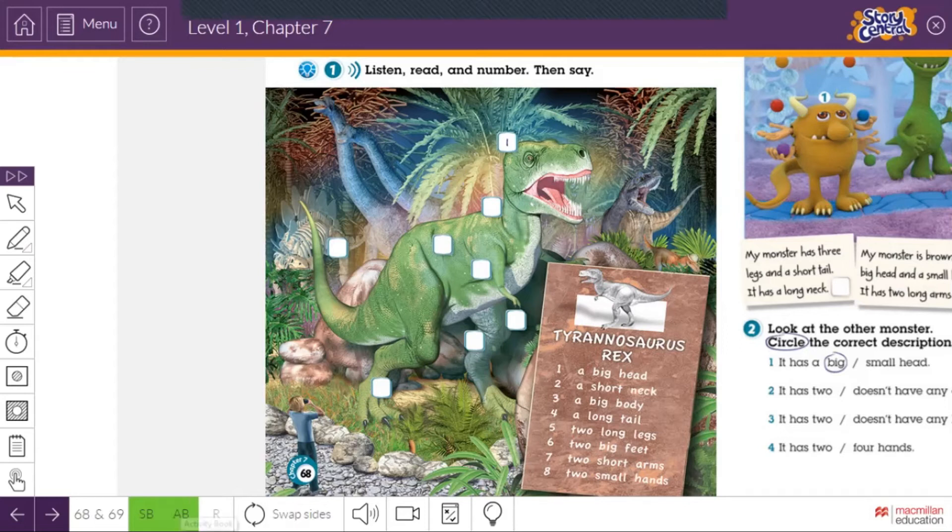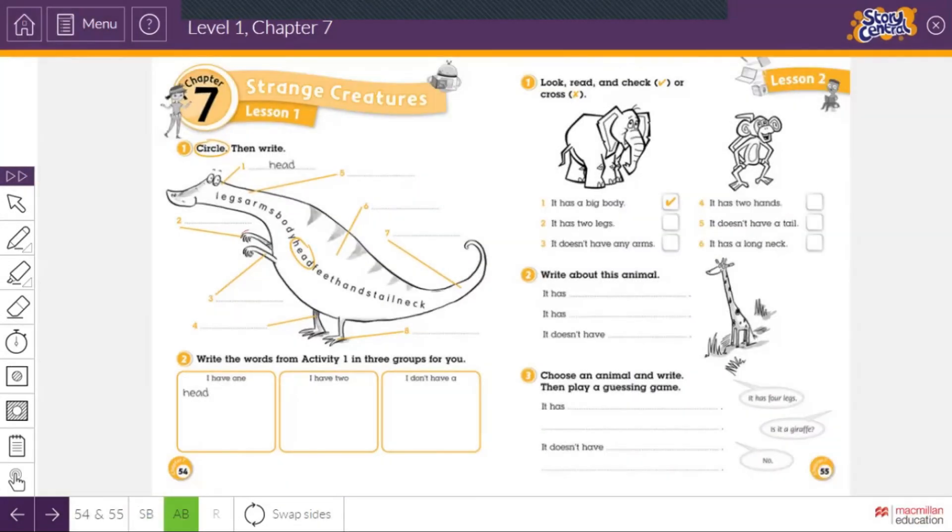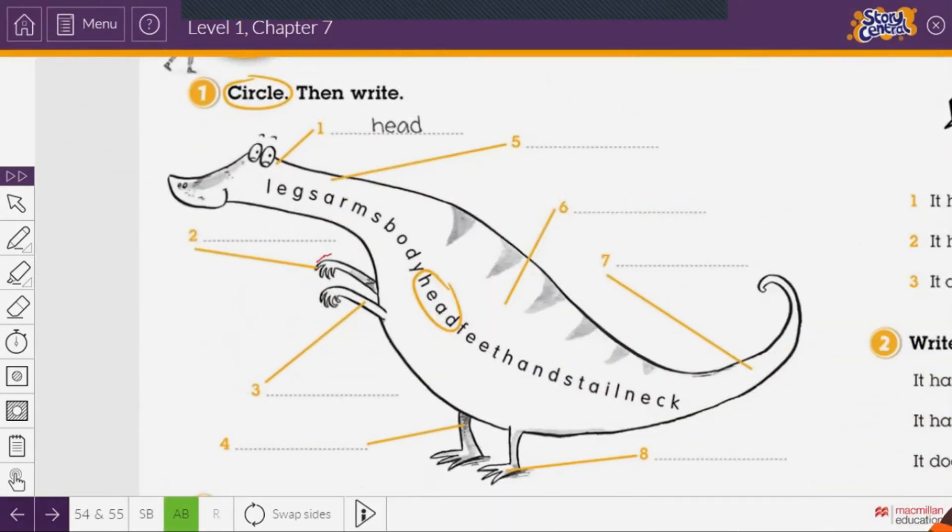Now open your activity book, the book without holes. Lesson one. Circle then write. So here you have to circle. You circle first inside the dino's body. There are many words here inside the body. One is finished for us, head. I found seven more words. You need to find seven more that are inside the dino's body here. For example, arms. You can circle it.